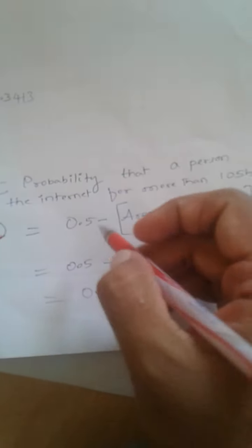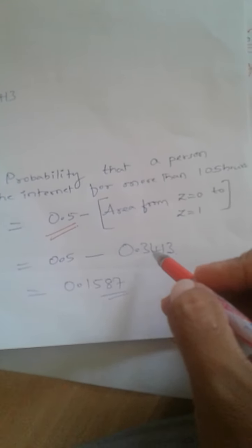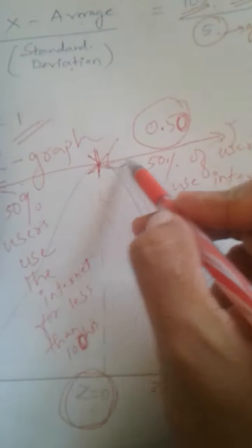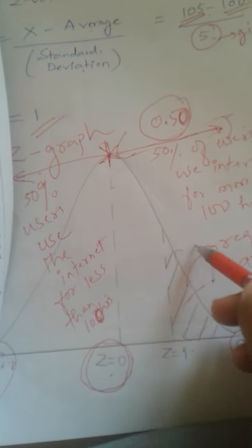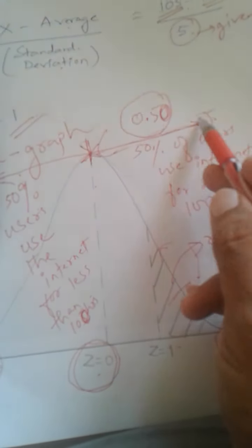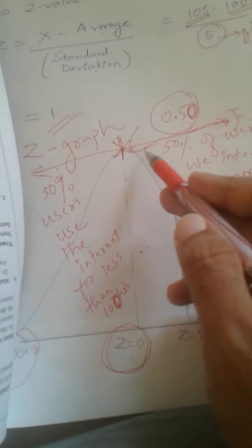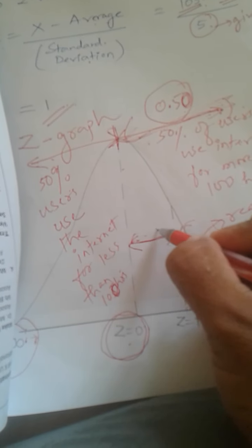Out of the 50 percent area, that means 0.5, we have to find out what this area is. So we have to subtract something from 0.5. The area from z=0 to z=1 is supposed to be subtracted — how do we do that?